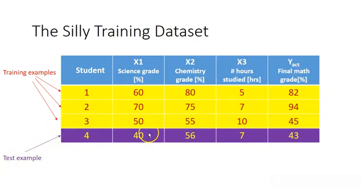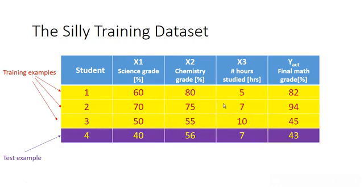This purple row is a test example. You would train a network on training data and then test it on test data. The model would never have seen row number four during training. You train it on the yellow data, and once you have a trained model you put in the input data from this test example and see how well it predicts the output.